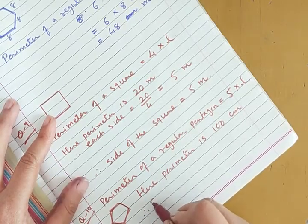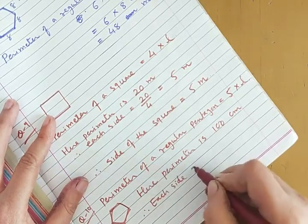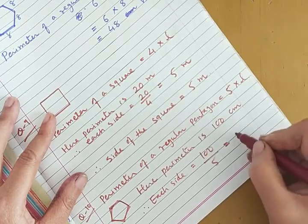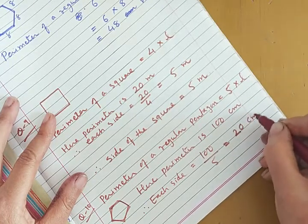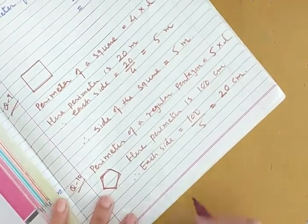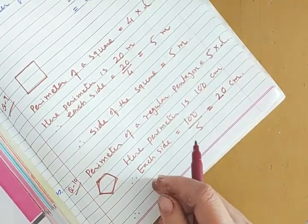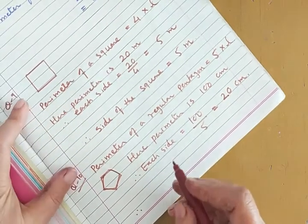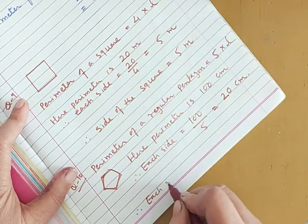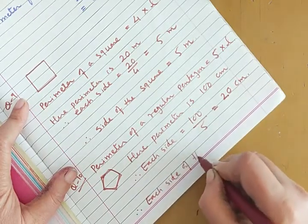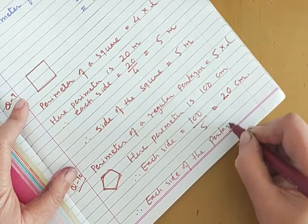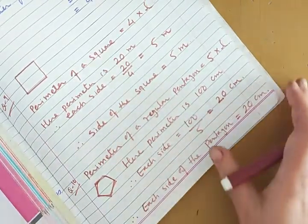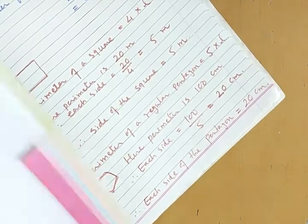Perimeter of a regular pentagon = 5 into L. Perimeter is 100 centimeter. Therefore each side is equal to 100 divided by 5, because pentagon mein five sides hogi. So answer hoga 20 centimeter. Therefore each side of the pentagon is equal to 20 centimeter. Clear — so this was question number ten.